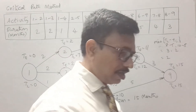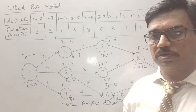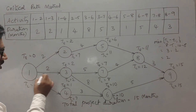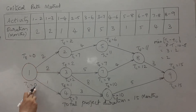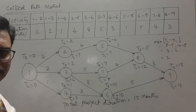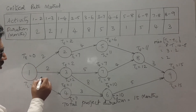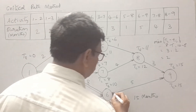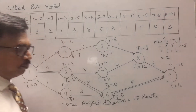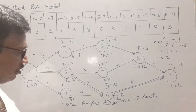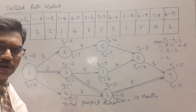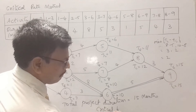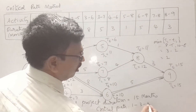If you observe the earliest and latest times at different nodes, at some nodes both are one and the same. The activities or nodes at which TE and TL are equal constitute the critical path. In this problem, activities 1→3, 3→6, and 6→9 have no slack. The critical path is 1 → 3 → 6 → 9.